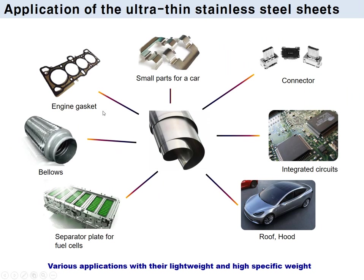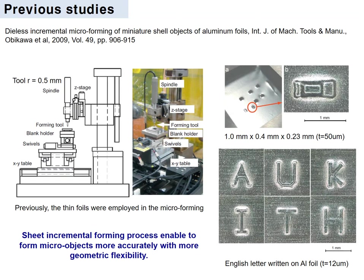We have employed ultra-thin stainless steel sheets in the incremental forming process. The ultra-thin stainless steel sheets are utilized as an engine gasket, small parts for a car, connector for electric parts, integrated circuit, loop, hood, separator for fuel cells, and bellows. It has many applications due to its lightweight and high specific strength.